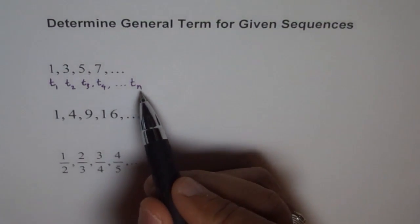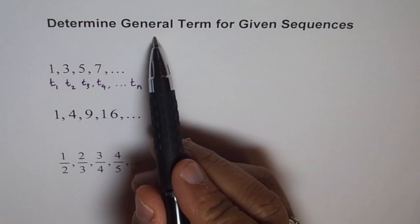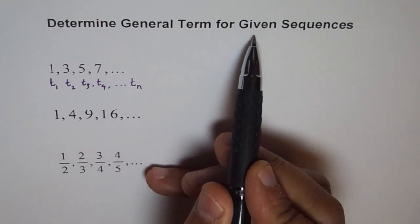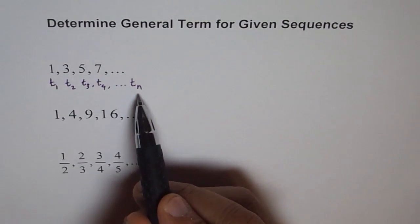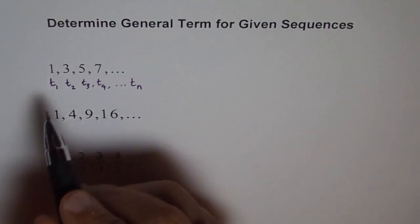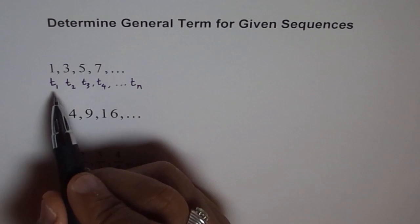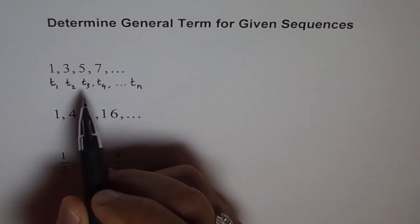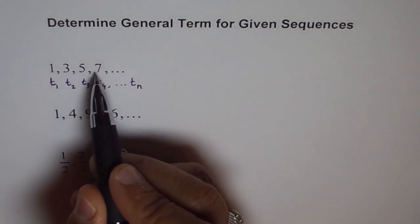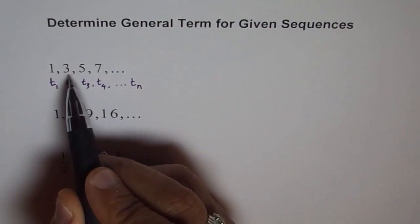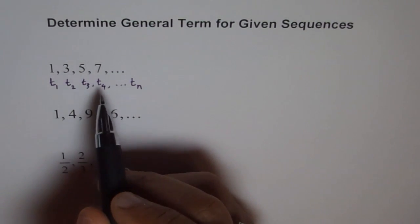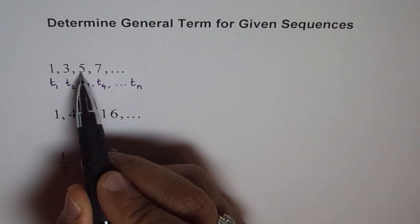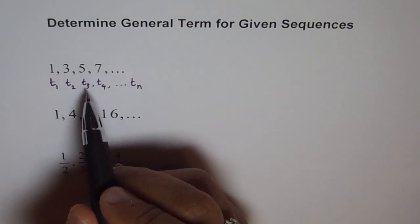Tn is the nth term of our sequence, and that nth term is called the general term. When we ask a question saying determine the general term for given sequences, that means Tn. T1 is 1 and T2 is 3, T3 is 5. These are term values.